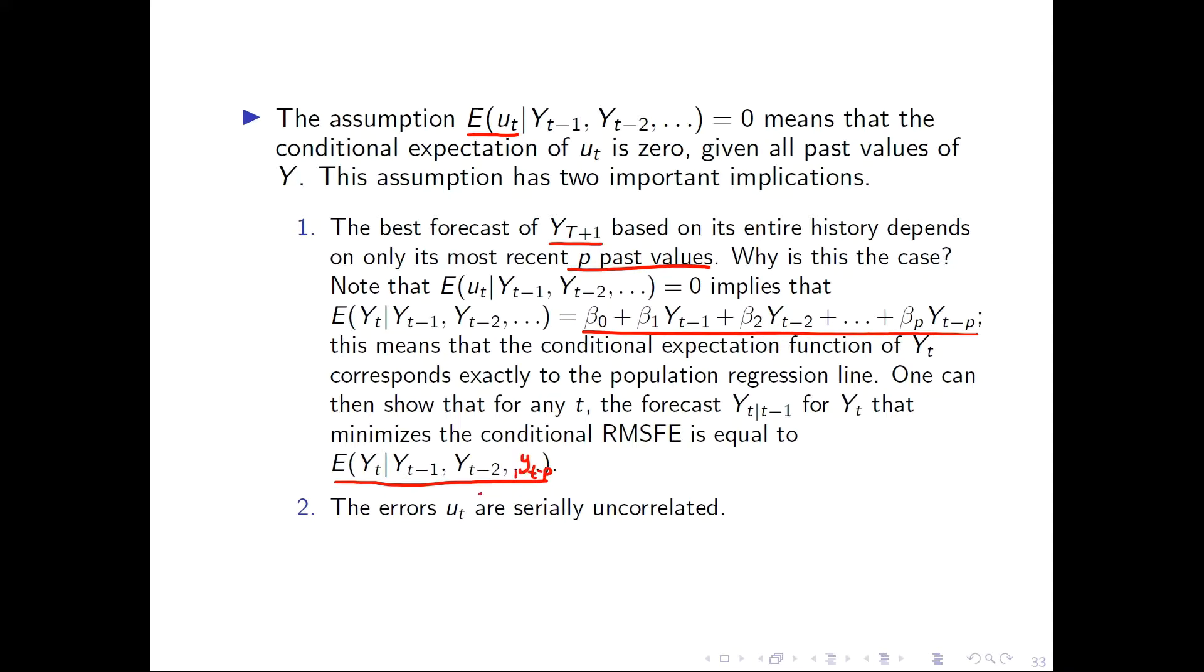And the second implication is that the error terms, they are serially uncorrelated. Which means that the correlation or the covariance of u_t, which is the residual at time t, and u at time T minus k, where k is greater than or equal to 1, this is equal to zero. So, there is no serial correlation in the residuals.